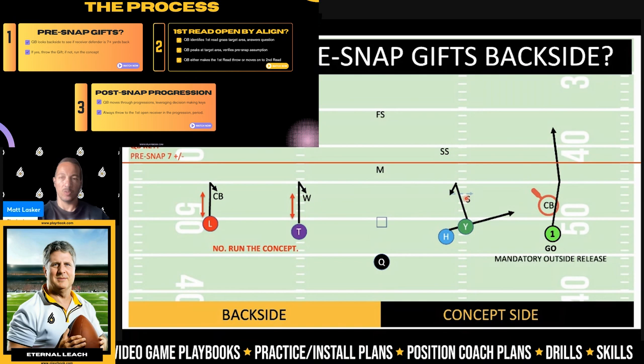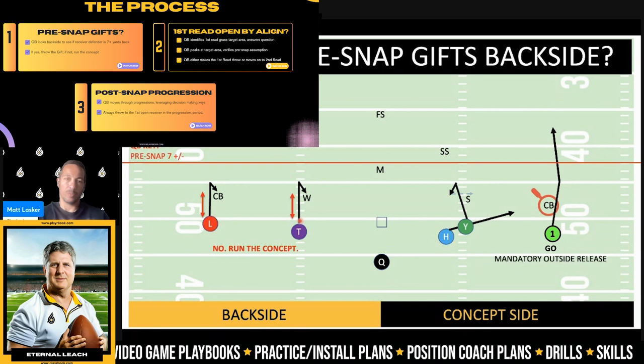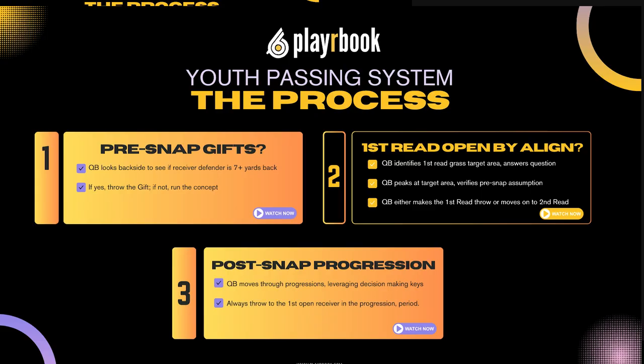Once the backside is dead, it is dead — we are only focused on the concept side for the entirety of that play. Pre-snap gifts are simple. Some coaches want them to run sticks, some want slants — completely fine. I would say the younger you go, stay with stick. Maybe eighth grade and above you start to add in slants if you wish, but honestly, stick is the perfect pass for high-percentage quick throws and most quarterbacks can sync up with their receivers running sticks pretty easily.